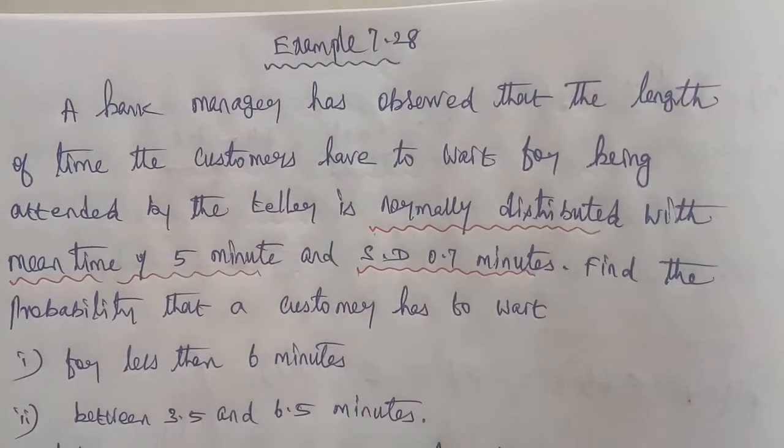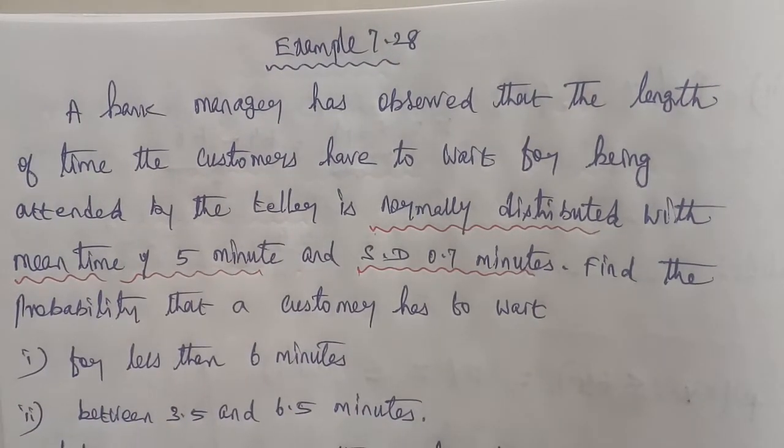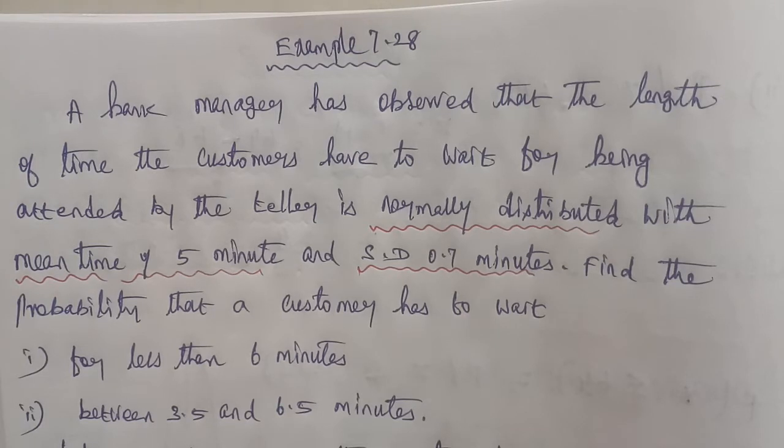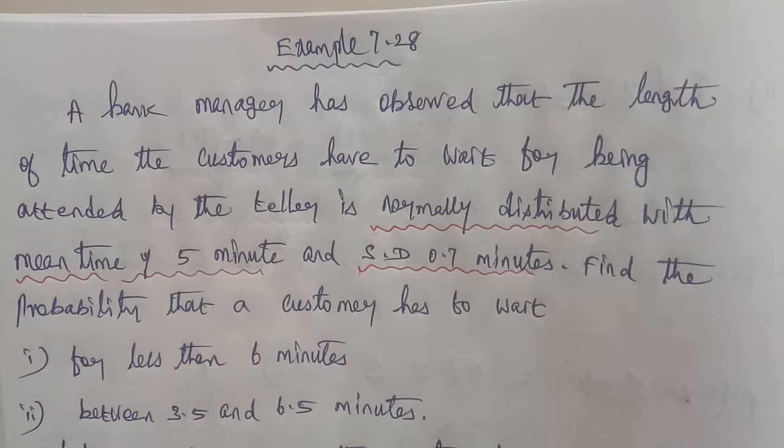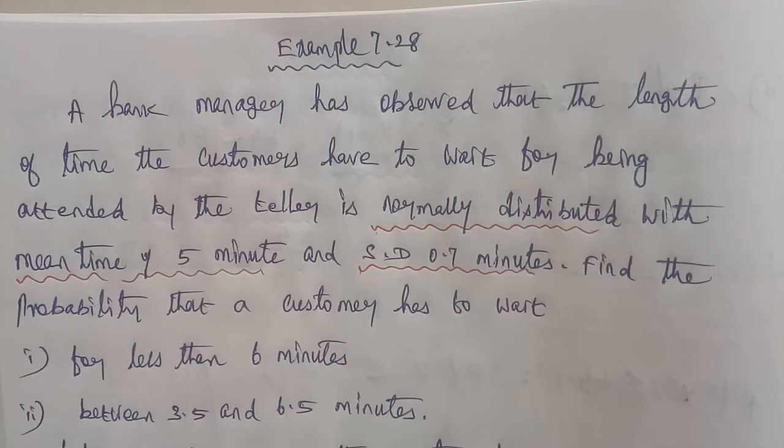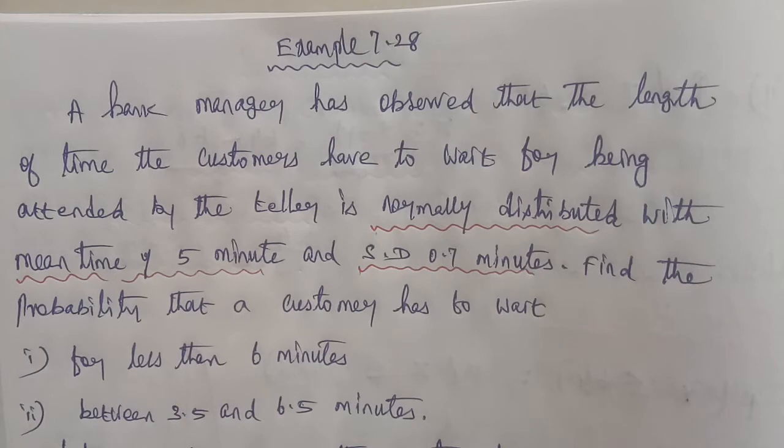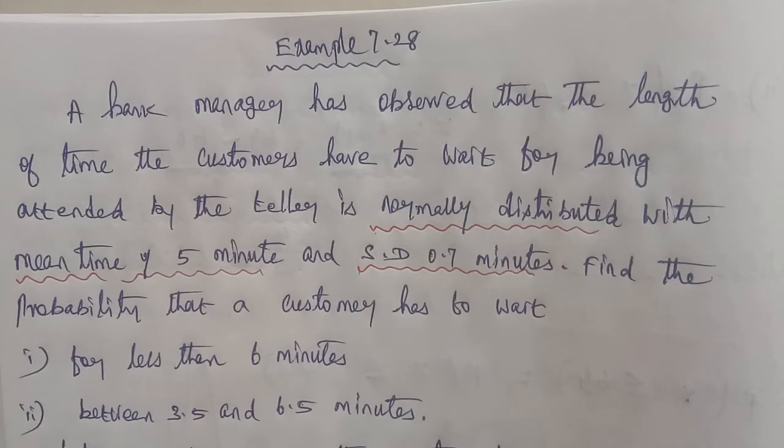Hi students, I am Gopinath. In this tutorial, we'll solve Example 7.28. The given question is: A bank manager has observed that the length of time the customers have to wait for being attended by the teller is normally distributed with mean time of 5 minutes and standard deviation of 0.5 minutes. Find the probability that a customer has to wait: (1) for less than 6 minutes, (2) between 3.5 and 6.5 minutes.